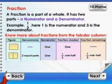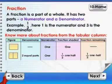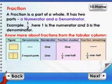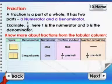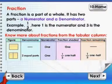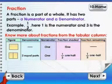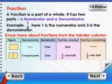A fraction is a part of a whole. It has two parts: a numerator and a denominator. Example: one by three — here, one is the numerator and three is the denominator. Learn more about fractions from the tabular column.